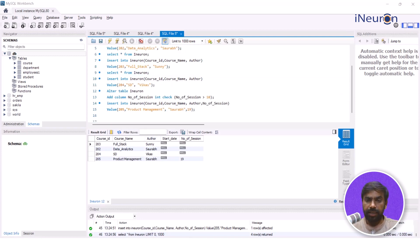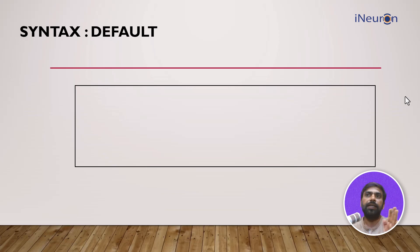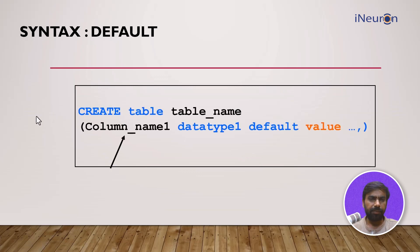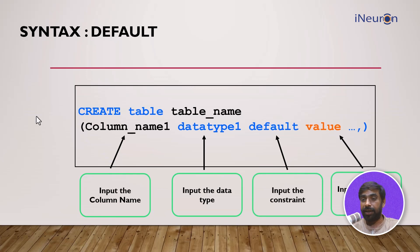Let's move on to the next constraint, which is the default constraint. The default constraint means that if a null value is entered — for example, if you forgot to enter a value in a certain column — default says replace that null with a specified value. For example, if there is no entry for number of projects, default puts a particular value in place of that null. The syntax is: create table, table name, column name, data type, then input DEFAULT followed by the value you want to put in.